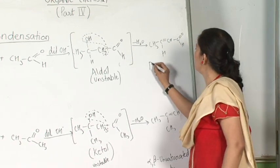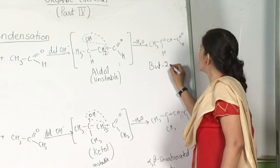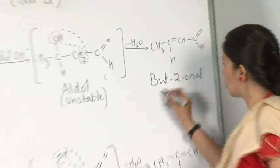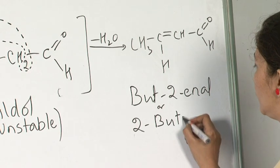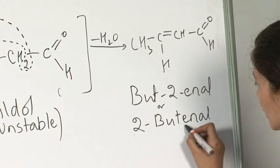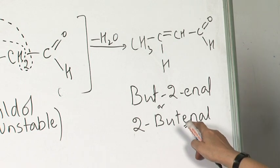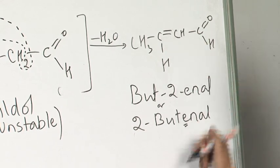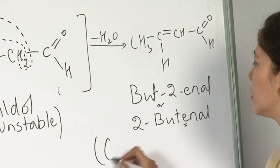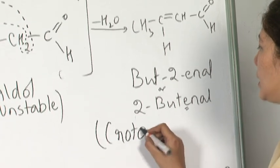The name of this compound is bute-2-enal. I can also write this as 2-butenal. You should be careful here. The 2 refers to the position where there is a double bond. The common name for this is crotonaldehyde.